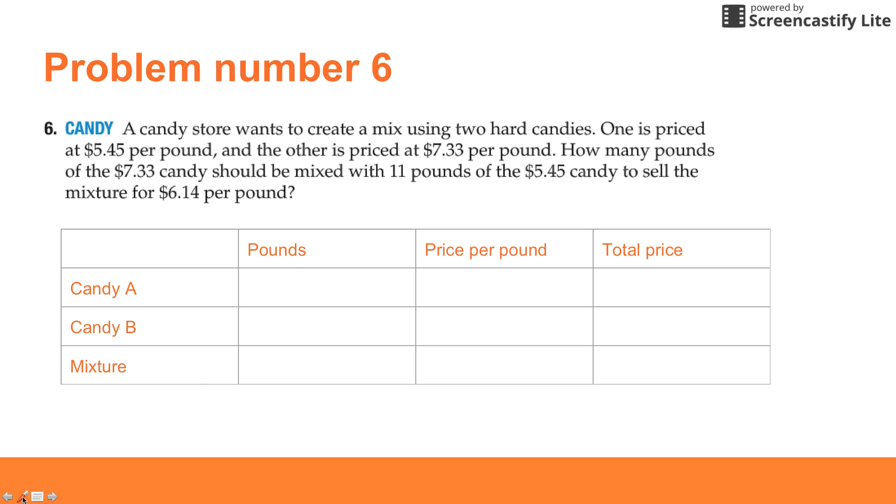It says a candy store wants to create a mix using two hard candies. One is priced at $5.45 per pound and the other is priced at $7.33 per pound. How many pounds of the $7.33 candy should be mixed with 11 pounds of the $5.45 candy to sell the mixture for $6.14 per pound?